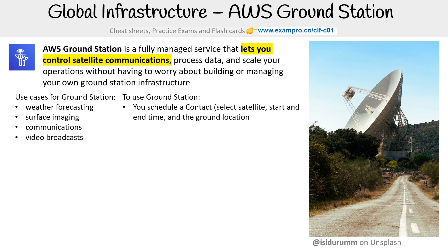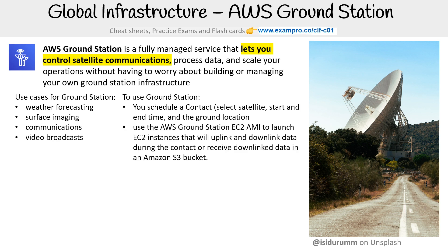The idea is that you would schedule a contact — that's where you're selecting a satellite, a start and end time, and the ground location. Then you use an AWS Ground Station EC2 AMI, an Amazon Machine Image, to launch EC2 instances that will uplink and downlink data during the contact, or receive downlink data in an Amazon S3 bucket.